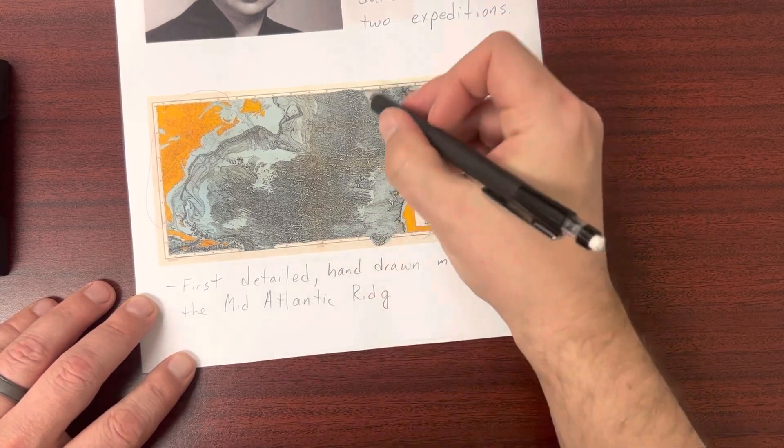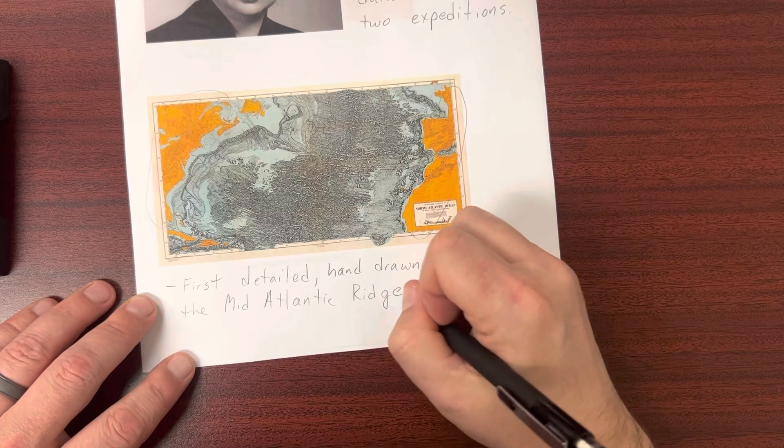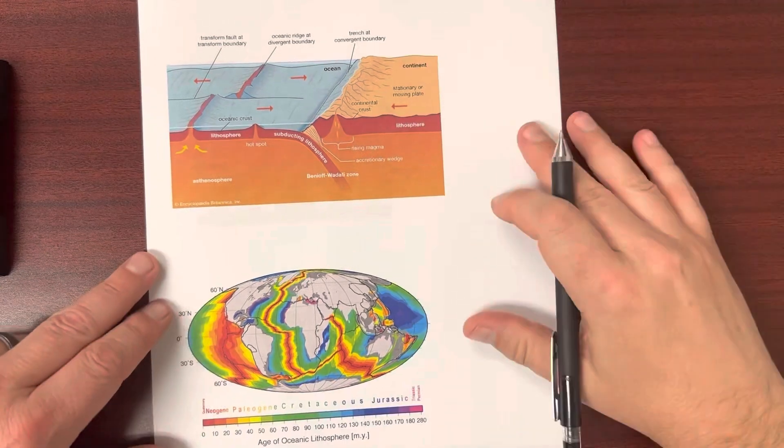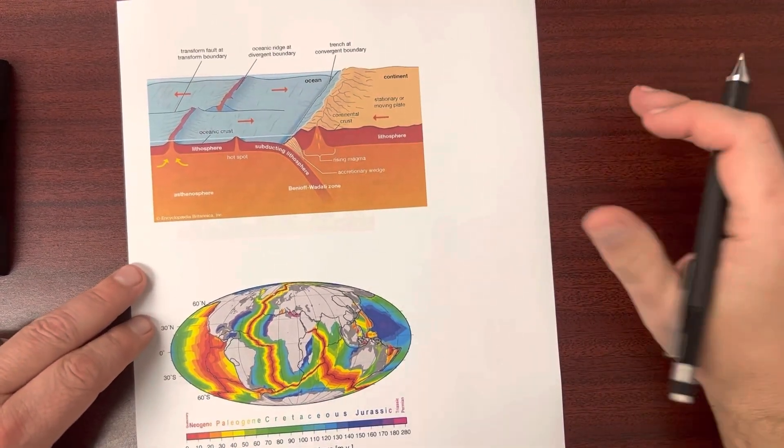Now the question was, why is there this big mountain chain on the ocean floor? So, more research was done.